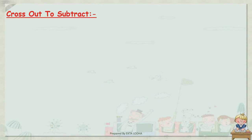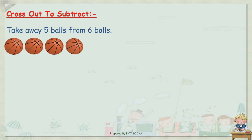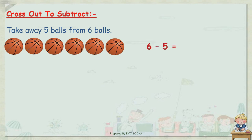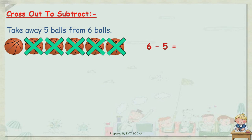Before we start with our first heading, let's see a few examples of subtraction. Cross out to subtract. Take away 5 balls from 6 balls — there are total 6 balls, and we have to take away 5. So let's write: 6 minus 5 is equal to. We cross out 1, 2, 3, 4, and 5. How many balls are remaining? Let's count — 1. So our answer is 1. One ball left.